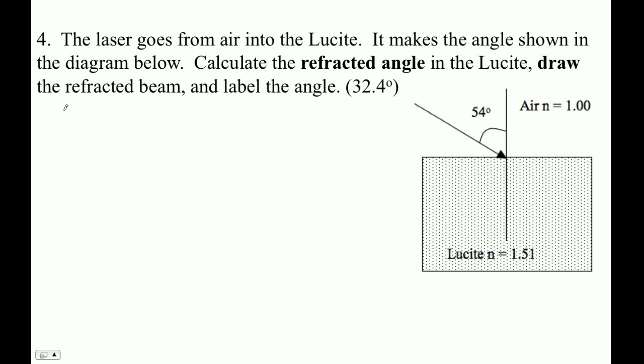So the world uses this formula: N1 sine theta 1 equals N2 sine theta 2, right? IB gives you this formula: N1 over N2 equals sine theta 2 divided by sine theta 1.